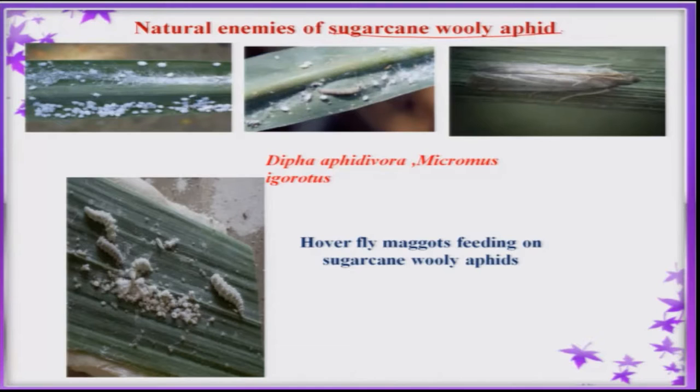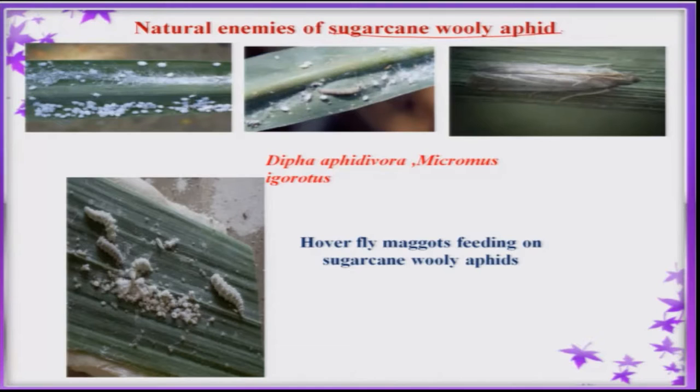For control of sugarcane woolly aphid, there are a good number of parasitoids and predators. Diaeretiella aphidivora and Micromus species are available in plenty in the sugarcane ecosystem. These can be multiplied and released in the sugarcane field for the management of woolly aphid.